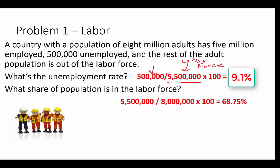We take the labor force of 5.5 million and divide it by our total population of 8 million. In both cases we multiply by 100 to convert from decimal to percent. So 0.6875 × 100 = 68.75%. That gives us the share of the population in the labor force and the unemployment rate.